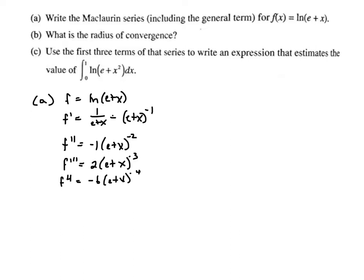So evaluating at 0, I'd have natural log of e is 1, so this would be 1. This would be 1 over e. This would be negative 1 over e squared. This would be 2 over e cubed. This would be negative 6 over e to the 4th.